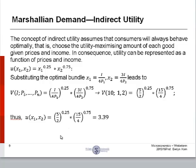We now derive the indirect utility function from the Marshallian demand for goods 1 and 2 using substitution. The concept of indirect utility assumes that consumers will always behave optimally. That is, they will choose the utility maximizing amount of each good given prices and income. In consequence, utility can be represented as a function of prices and income. So what's happening here? We start with our Cobb-Douglas utility function right here. And substituting in the values for x1 and x2 in terms of income and prices, we arrive at the indirect utility function, which we have right here. It's just the same thing.